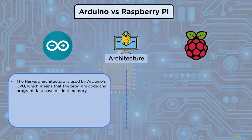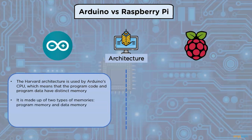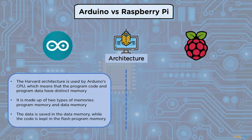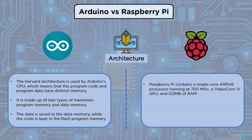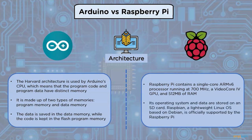Regarding architecture, Arduino CPU uses the Harvard architecture, which means that program code and program data have distinct memory. It is made up of two types of memory: program memory and data memory. The data is saved in data memory while the code is kept in flash program memory. In contrast, Raspberry Pi contains a single-core ARMv6 processor running at 700 MHz, a VideoCore IV GPU, and 512 MB of RAM. Its operating system and data are stored on an SD card. Raspbian, a lightweight Linux OS based on Debian, is officially supported by Raspberry Pi.